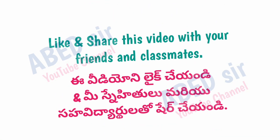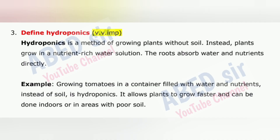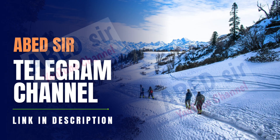Next important question is 3: Define hydroponics. Hydroponics is a method of growing plants without soil. Instead, plants grow in a nutrient-rich water solution, and the roots absorb water and nutrients directly. For example, growing tomatoes in a container filled with water and nutrients instead of soil is hydroponics. It allows plants to grow faster and can be done indoors or in areas with poor soil.